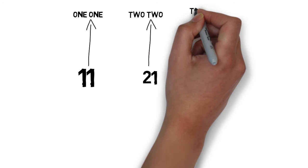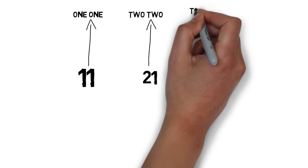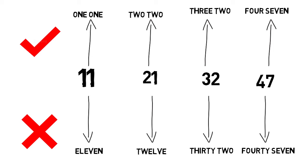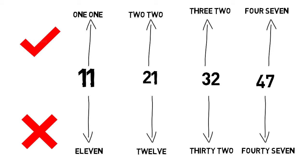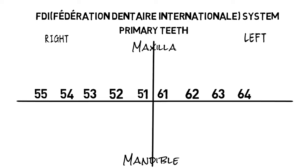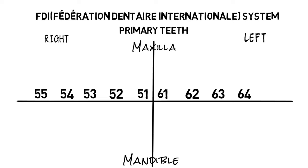Notice how I'm saying '1 1', '2 1', '3 2', or '4 7' — and not 11, 12, 32, or 47 — because they are pronounced as two individual numbers rather than a combined number. For naming primary teeth in the FDI system, only the first digit representing the quadrant will change: from 1, 2, 3, 4, they become 5, 6, 7, 8, each representing the same quadrant as for permanent teeth but with changed numbers.